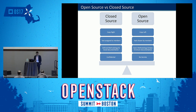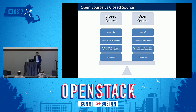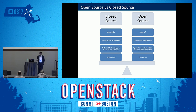Closed source typically believes in defined methodology and good documentation. In open source, the methodology is quite open and documentation takes a back seat. In closed source, there's a culture of assigning tasks and asking for status, whereas in open source, members mostly choose their own jobs. And then there's copyright versus copyleft: closed source prohibits copying, while open source leaves the copy behind — it's copyleft, not copyright.